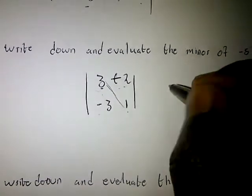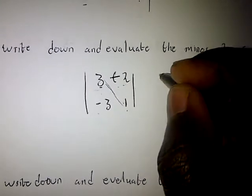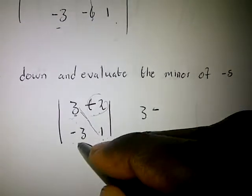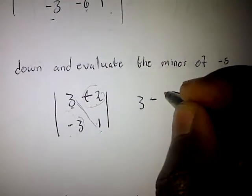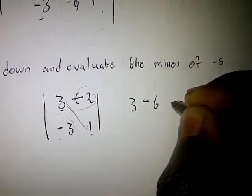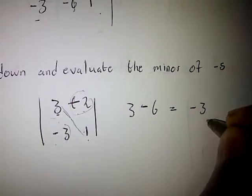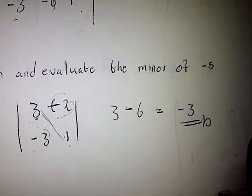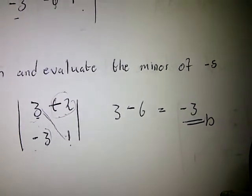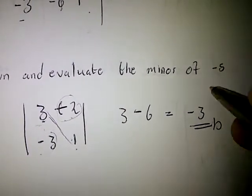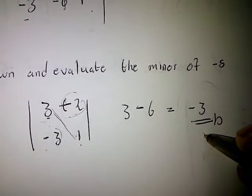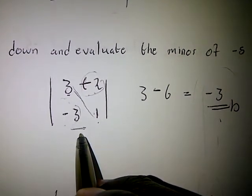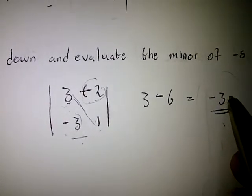To evaluate the minor, we have to simplify it. We cross-multiply: 3 multiplied by 1 gives us 3, minus negative 2 multiplied by negative 3, which gives us positive 6. So 3 minus 6 equals negative 3. This is the evaluated minor of negative 5. Note that the 2x2 matrix itself is also the minor before simplification.